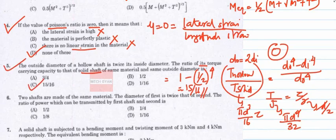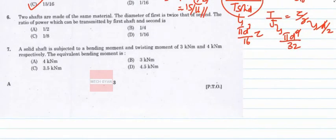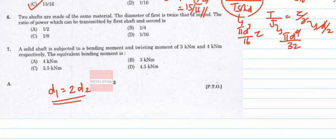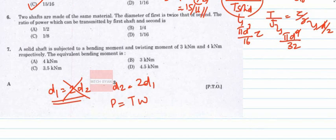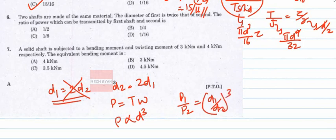Question 6: Two shafts made of the same material where D2 = 2D1. Power P = T × ω, and from the torsion equation torque is proportional to D³. Therefore P1/P2 = (D1/D2)³ = (1/2)³ = 1/8. The answer is option C.